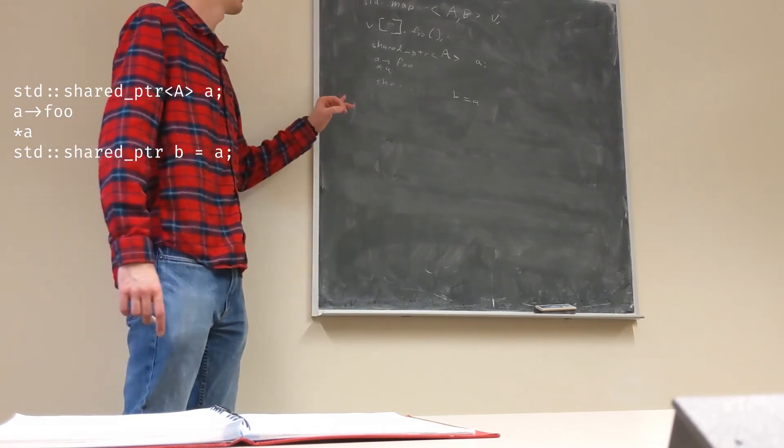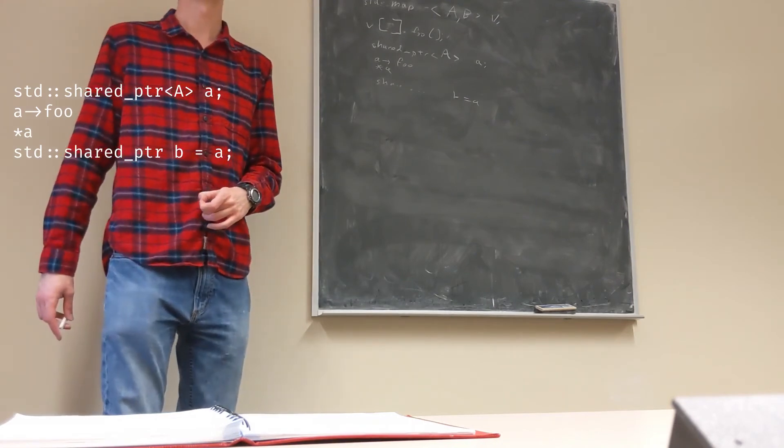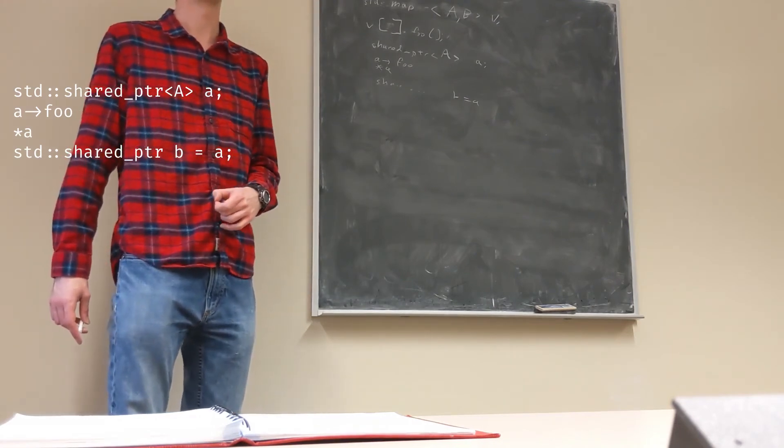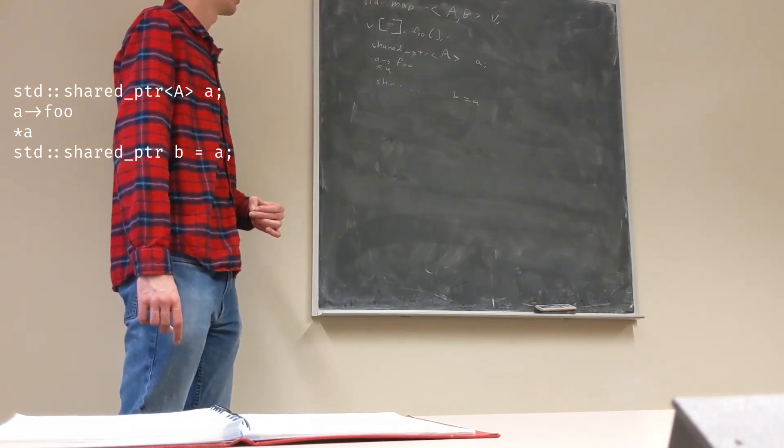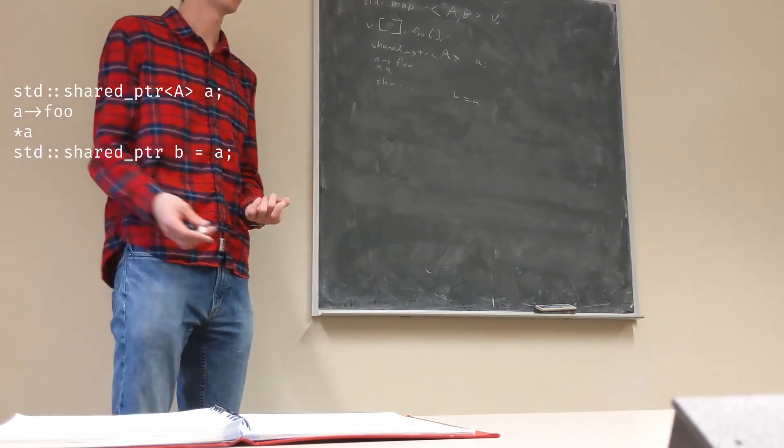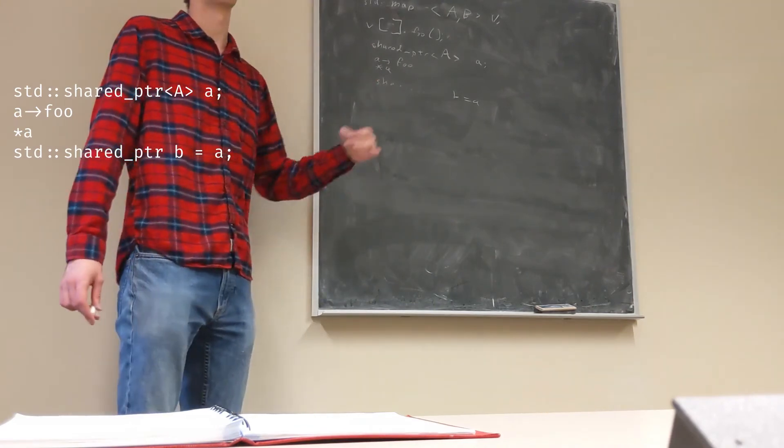This unique pointer I mentioned, which is the same as shared pointer, except that it just doesn't let you make a copy of it. It's a compiler error if you try to make a copy of it. So you don't accidentally leave a copy of the pointer somewhere, because you can't make a copy of it. And when it goes out of scope, it deletes it.